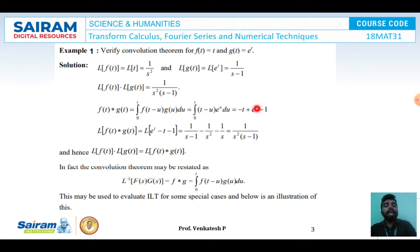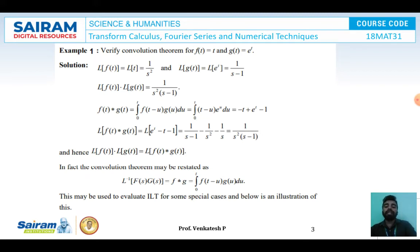Now applying the Laplace Transform to both sides of this equation: the Laplace Transform of f(t) star g(t) equals the Laplace Transform of (e^t minus t minus 1). Expanding this gives the Laplace Transform of e^t minus the Laplace Transform of t minus the Laplace Transform of 1, which equals 1/(s minus 1) minus 1/s² minus 1/s. Taking LCM gives 1/(s²·(s minus 1)). Combining both sides confirms that the Laplace Transform of f(t) into the Laplace Transform of g(t) equals the Laplace Transform of f(t) star g(t).